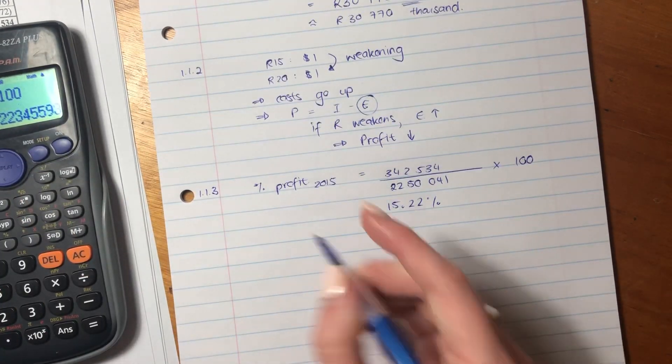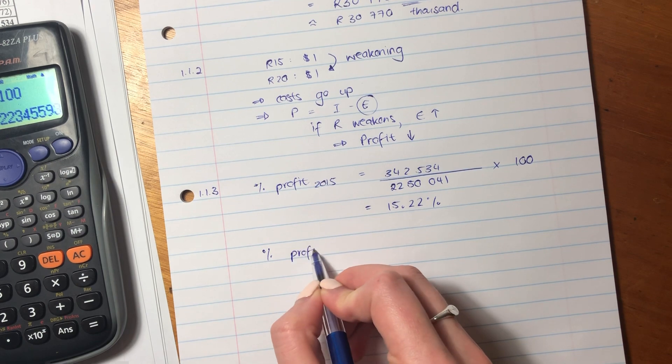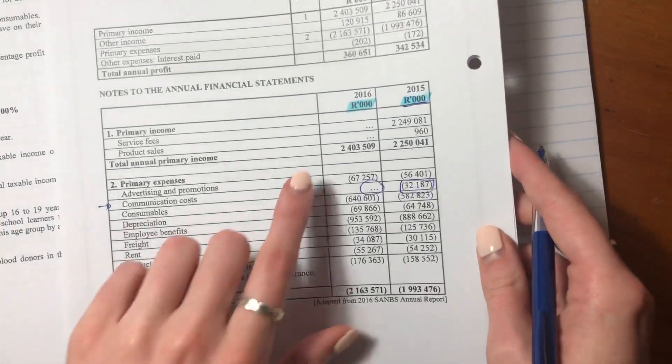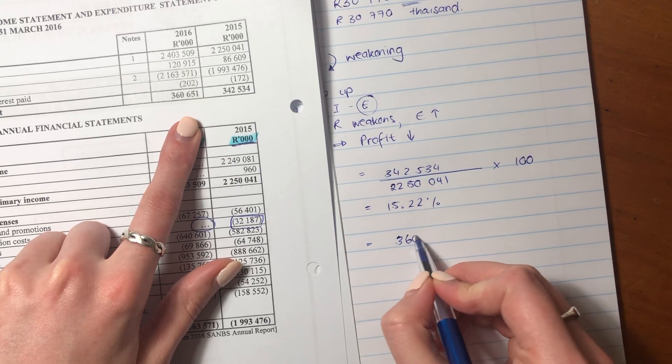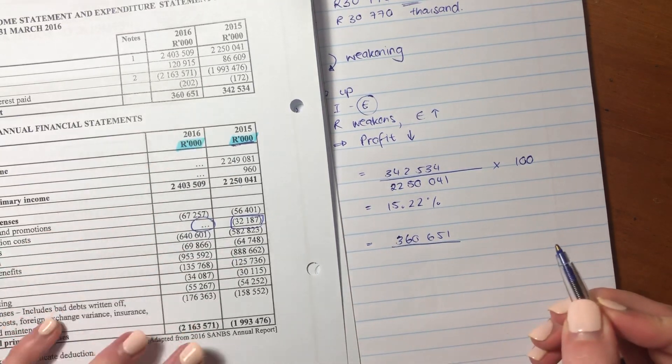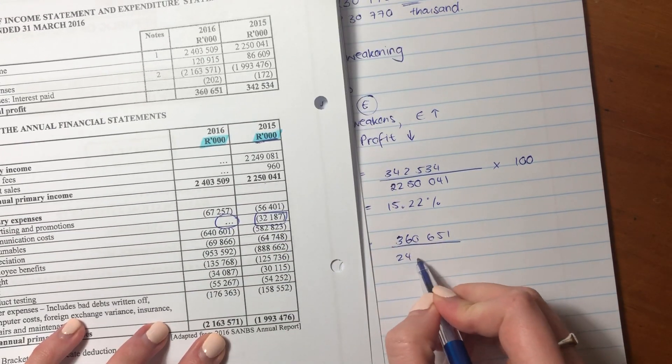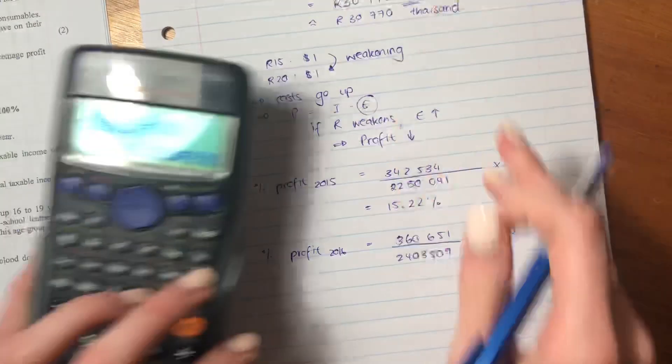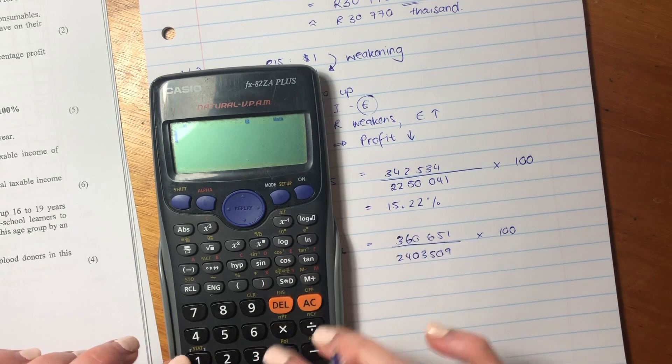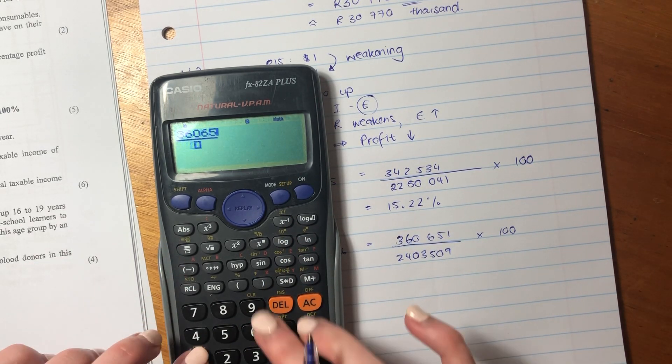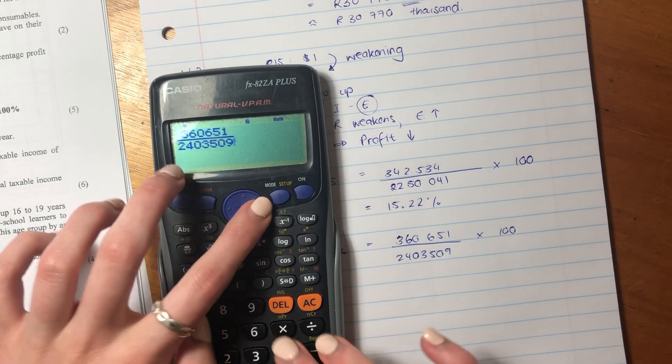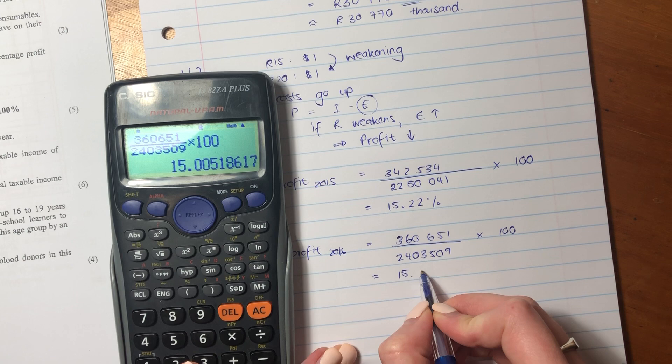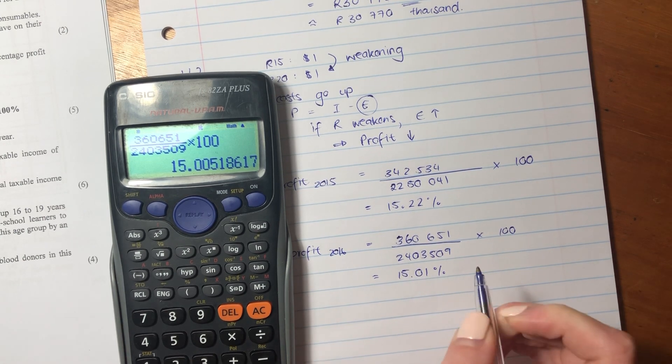Let's now do the same calculation, but now we're doing it for 2016. So for 2016, the annual total profit is 360,651 over total annual primary income, 2,403,509 times by 100. Let's put that into our calculator. 360,651 over 2,403,509 times 100, and that is 15.01%.